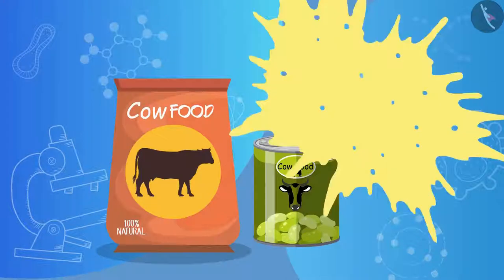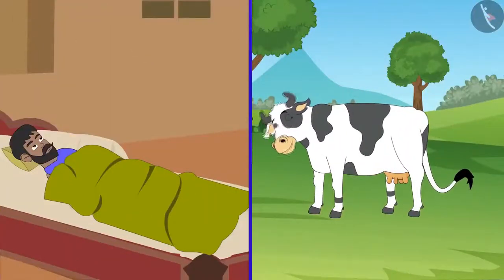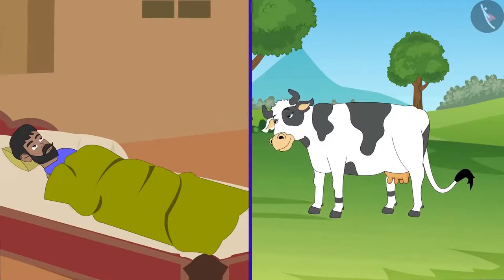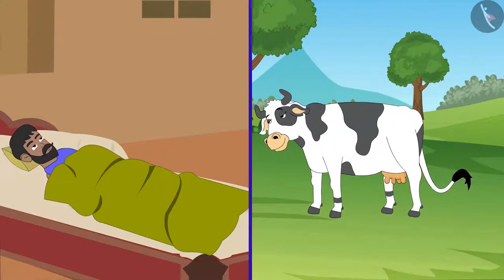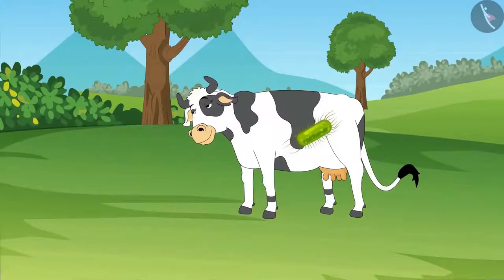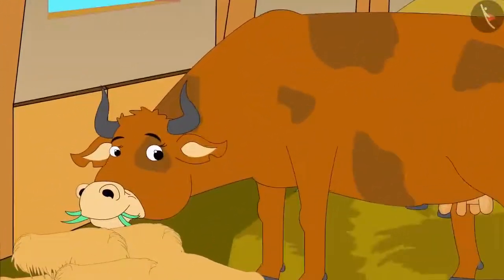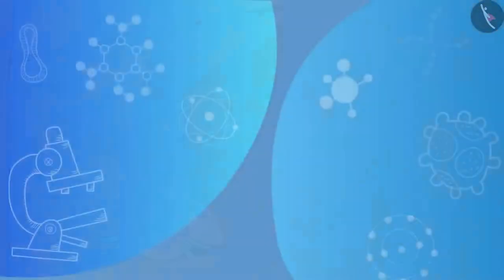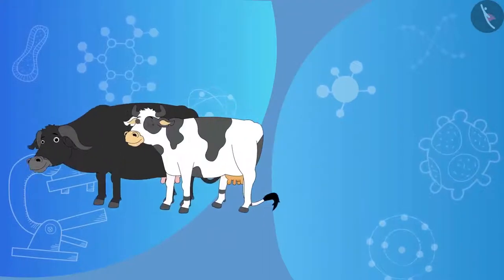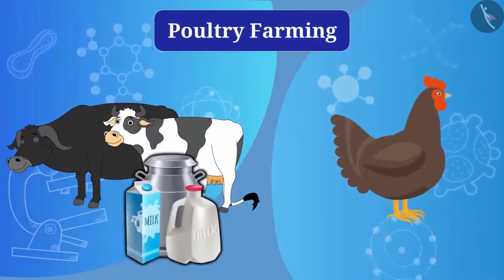Just as humans get sick, animals also get sick. To protect animals from different kinds of diseases, animals are vaccinated against viruses and bacterial infections. So that was all about cattle farming. Now let's understand about poultry farming.